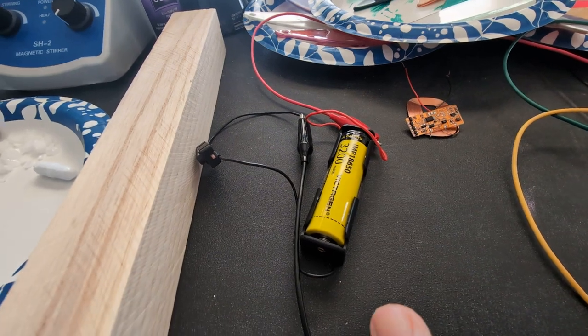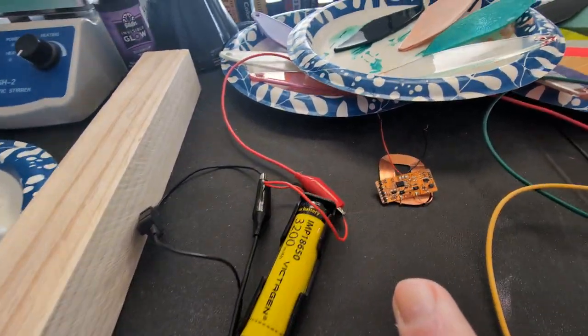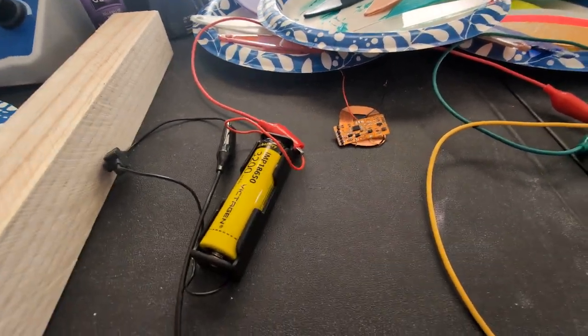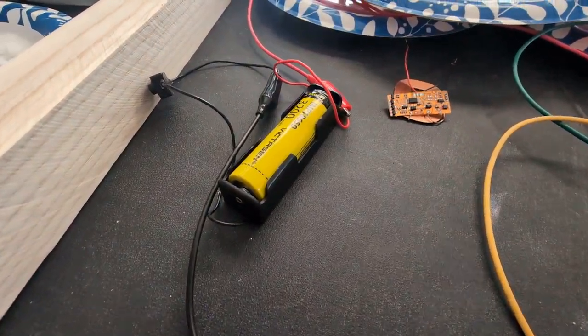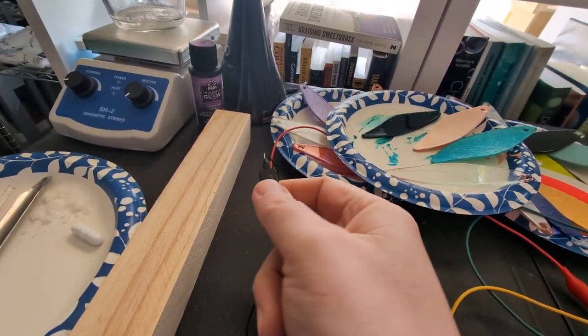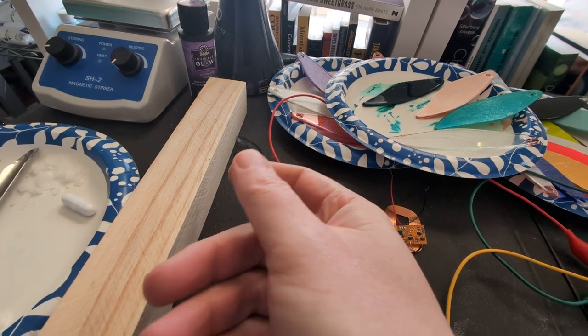This is the battery that will be inside of the wand providing power. There is the charging circuit. I don't have that hooked up because it's not necessary for the demo right now. This is going to be providing power.